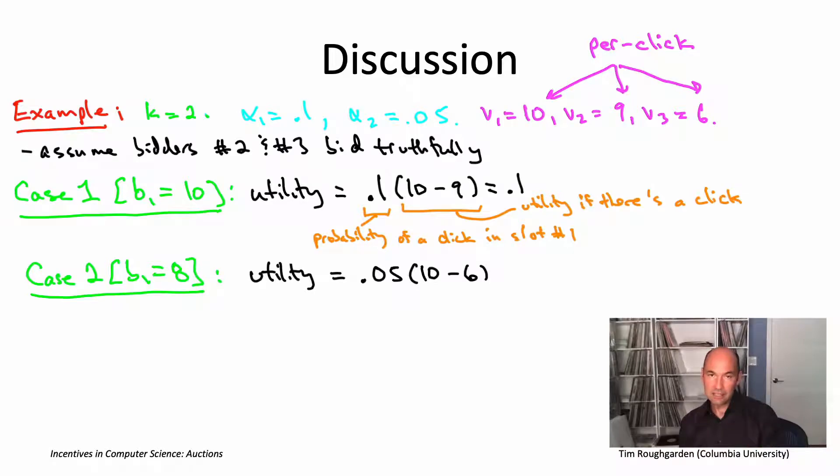The bad news for the bidder is they're getting less clicks. The good news is that they're getting those clicks more cheaply. And one line of algebra shows it actually winds up better off. It winds up with a utility of 0.2 at the end of the day.